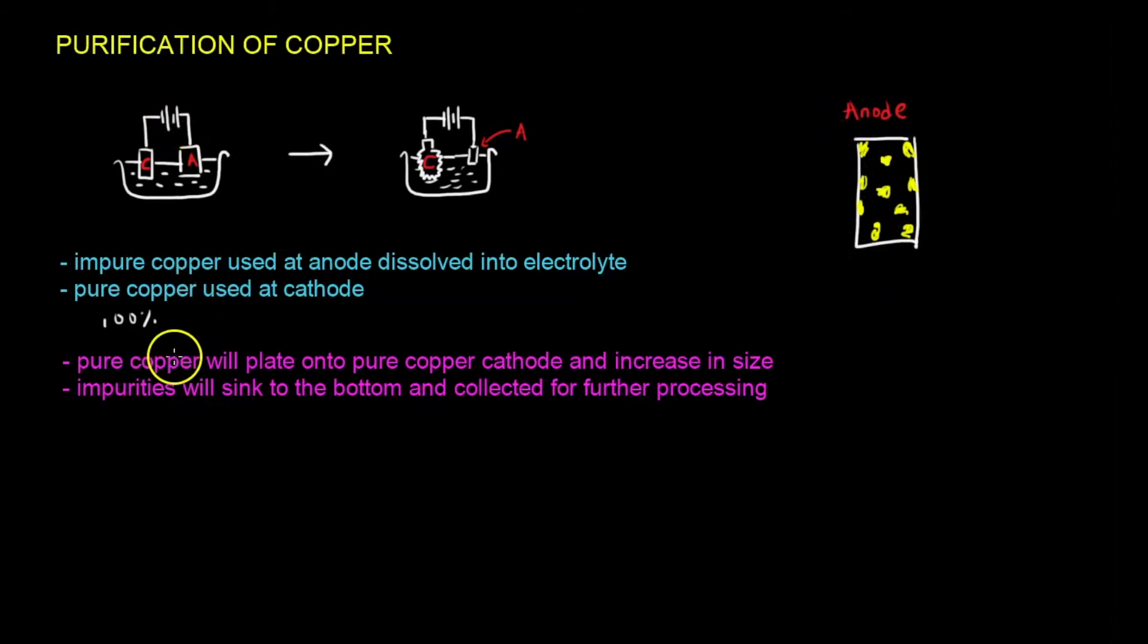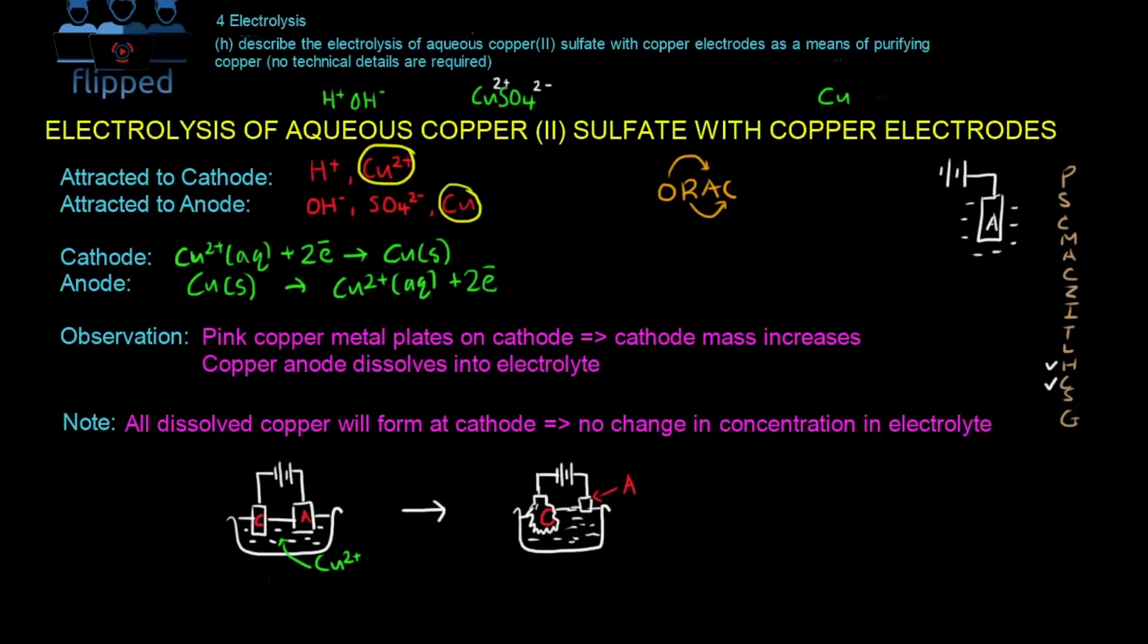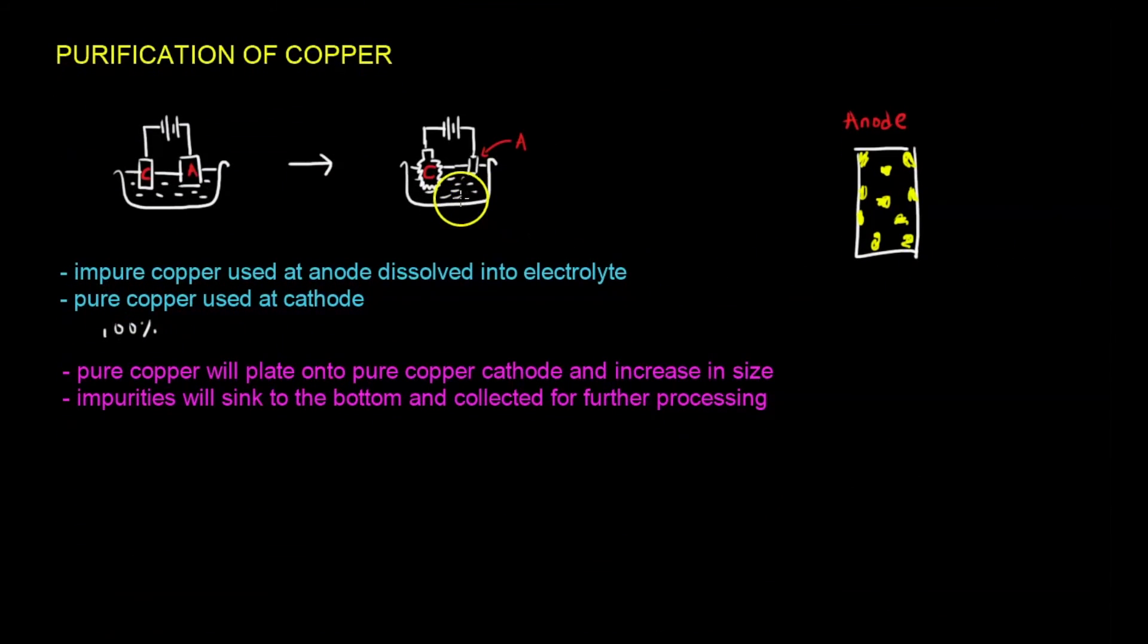So when pure copper will be plated on the pure copper cathode and increase in size, this is what we observe. Impurities will sink to the bottom to be collected for further processing. The anode is impure. At the anode side, the reaction has to be copper only. So impurities will not get any reaction. They will just fall to the bottom. That's why we say that it sinks to the bottom and is collected for further processing later.